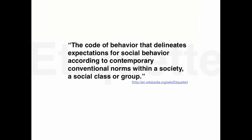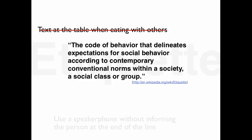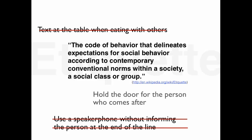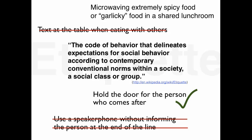Wikipedia defines etiquette as the code of behavior that delineates expectations for social behavior according to contemporary conventional norms within a society, a social class or group. For example, one should not text at the table when eating with others. One should not use a speakerphone unless the person at the end of the line is alerted and is okay with it. Another example would be whoever arrives at a door first should hold the door for the person who comes next, regardless of gender. One last good example is to avoid microwaving extremely spicy or garlicky food in a shared lunchroom.